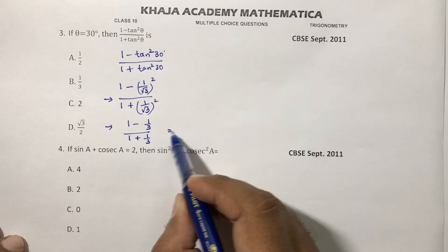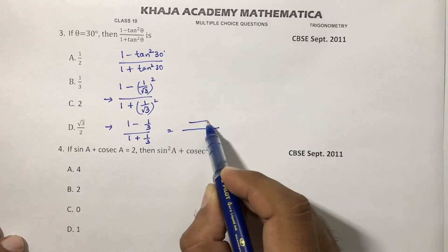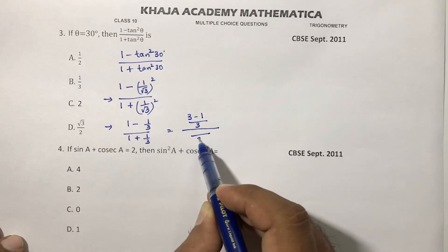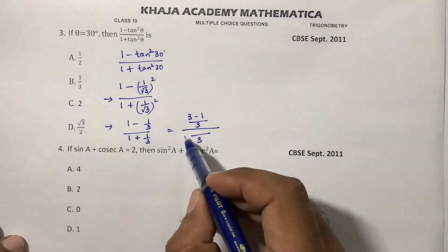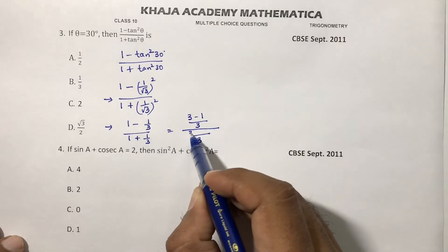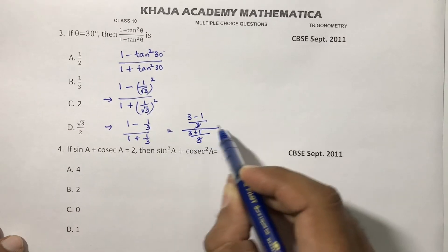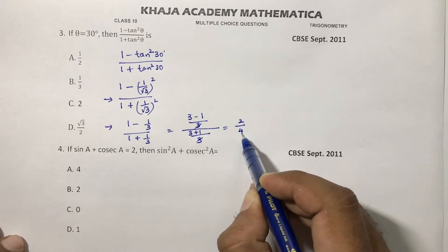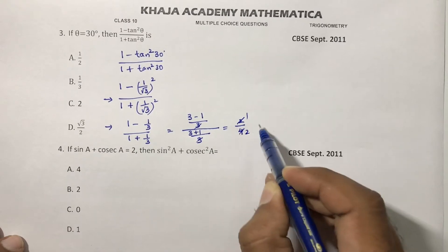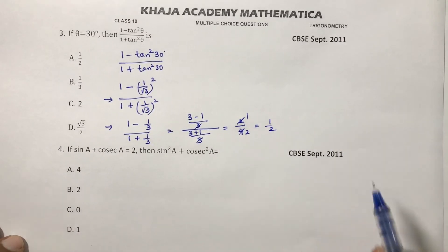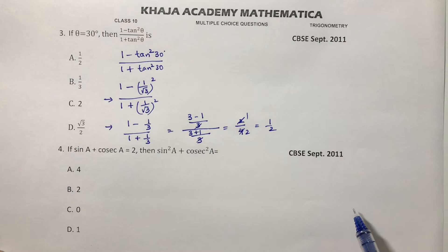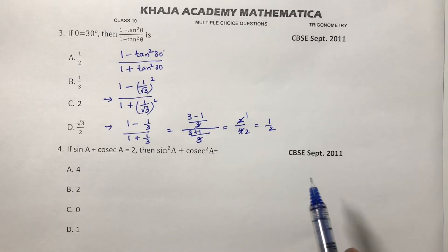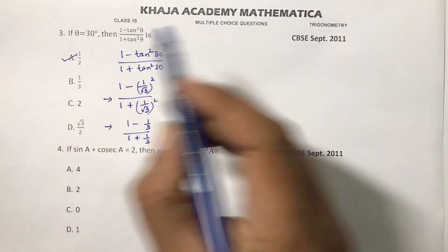Take LCM in the numerator — LCM is 3, so 3 minus 1. In the denominator, LCM is 3, so 3 plus 1. The 3s cancel, leaving 2 over 4, which is 1 by 2. So the correct option is A.